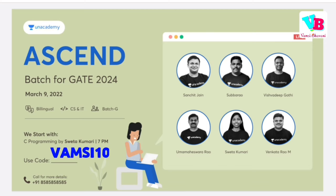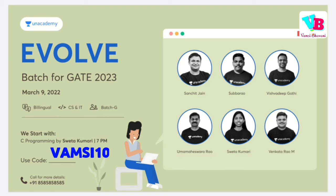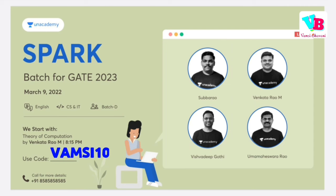The first batch starts March 9th. There are multiple batches available: Ascent (Gate 2024, bilingual), Evolve (Gate 2023, bilingual, starting March 9th), and PARC (Gate 2023, English only). You can call with your phone number to get further details, and use code 1C10 for a 10% discount.